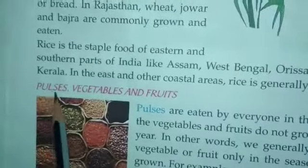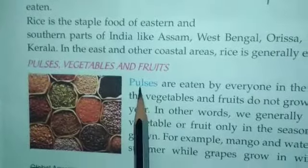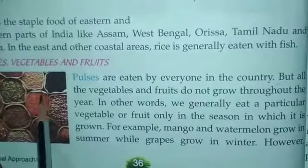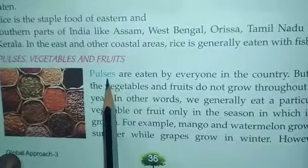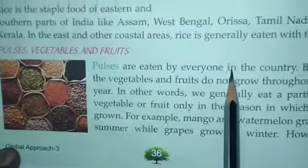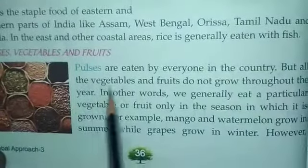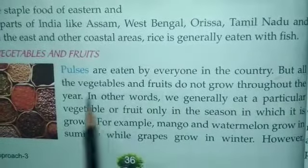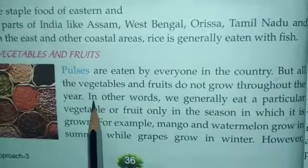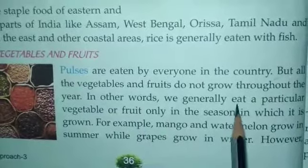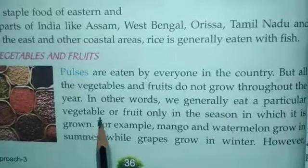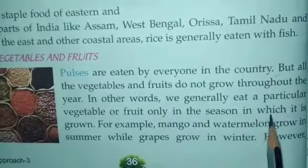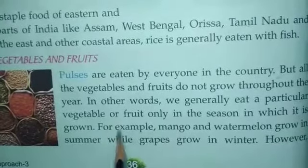Now let us look at pulses, vegetables and fruits. Pulses means dal. See the picture of different types of pulses in your book. Pulses are eaten by everyone in the country, but all vegetables and fruits do not grow throughout the year. In other words, we generally eat a particular vegetable or fruit only in the season in which it is grown.